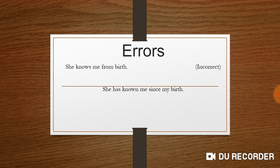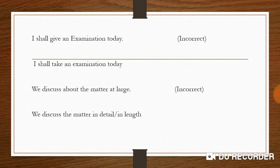First sentence: 'She knows me from birth.' Here 'from birth' is incorrect — this indicates a point of time. As discussed in the since/for video, where there is a point of time, simple tense and continuous tense never take 'since' or 'for.' So the correct option is: 'She has known me since my birth.'